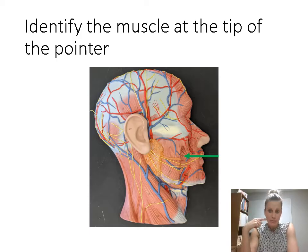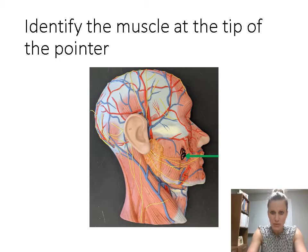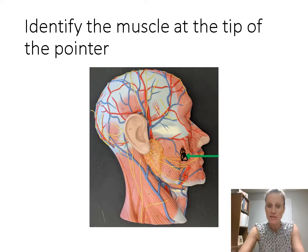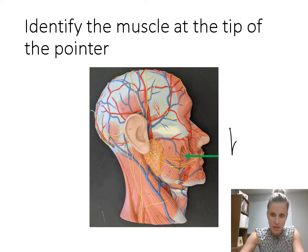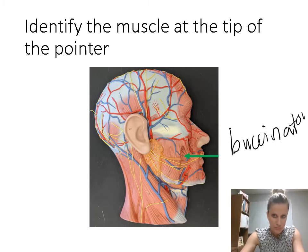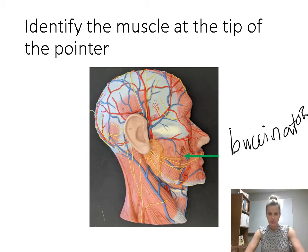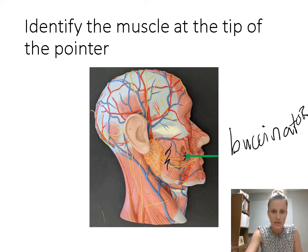This is pointing to a deeper muscle in the cheek. You can only see part of it because there are other muscles on top of it. Remember that the cheek is referred to as 'buccal.' So this muscle is named the buccinator. The masseter was the superficial one; the buccinator is this deeper little triangle that you drop down into.